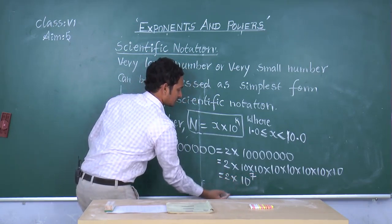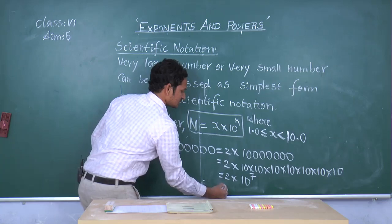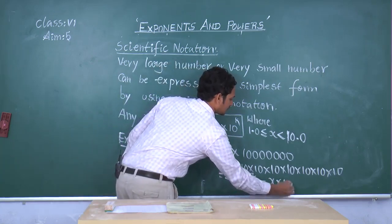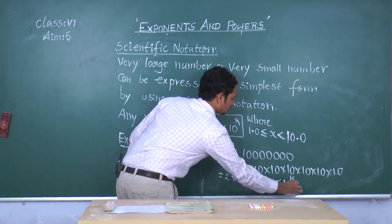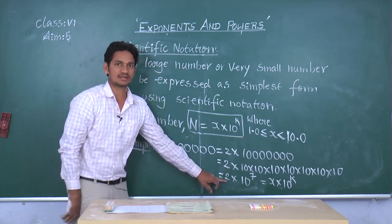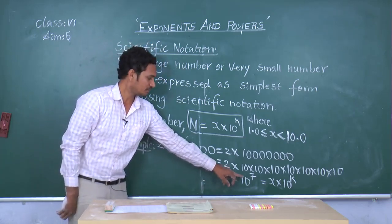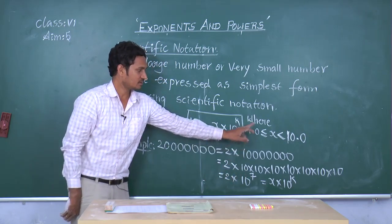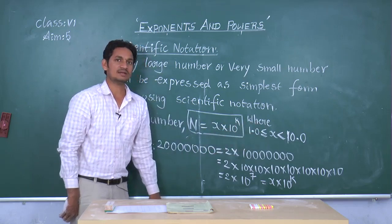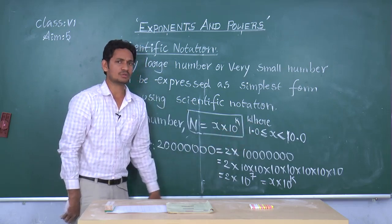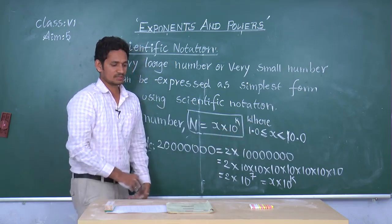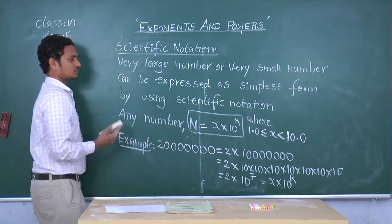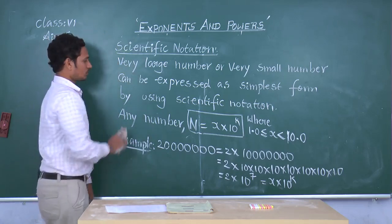So, is it in the form of x into 10 power k or not? It is looking like x into 10 power k, where x lies between 1 and 10, and sometimes x may be equal to 1. For this, I would like to take one more example.